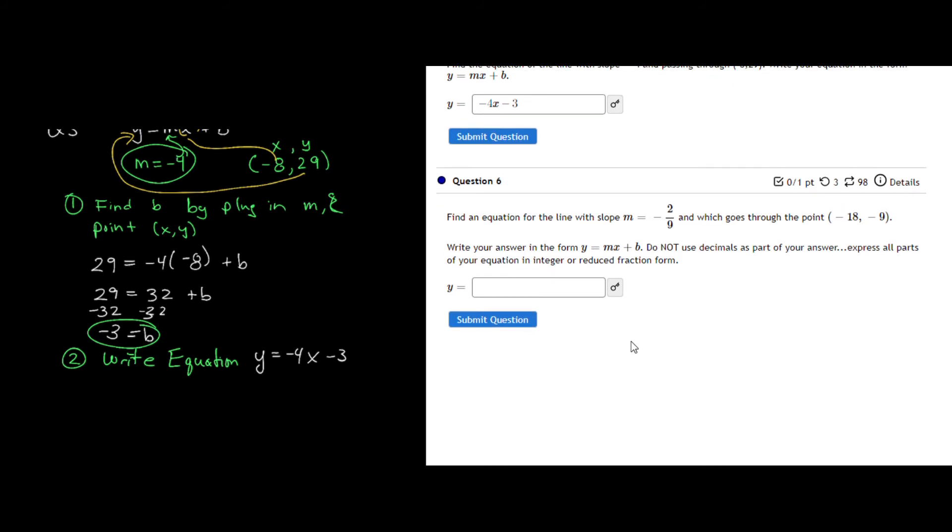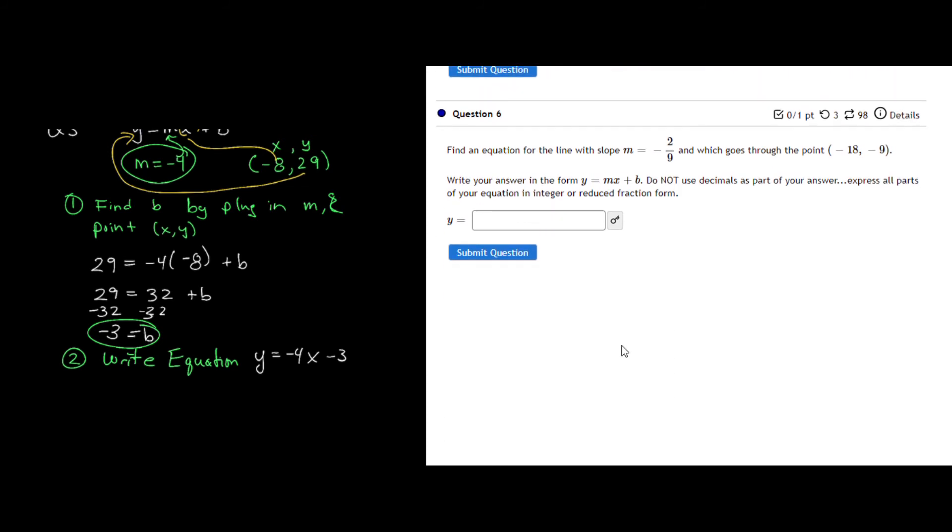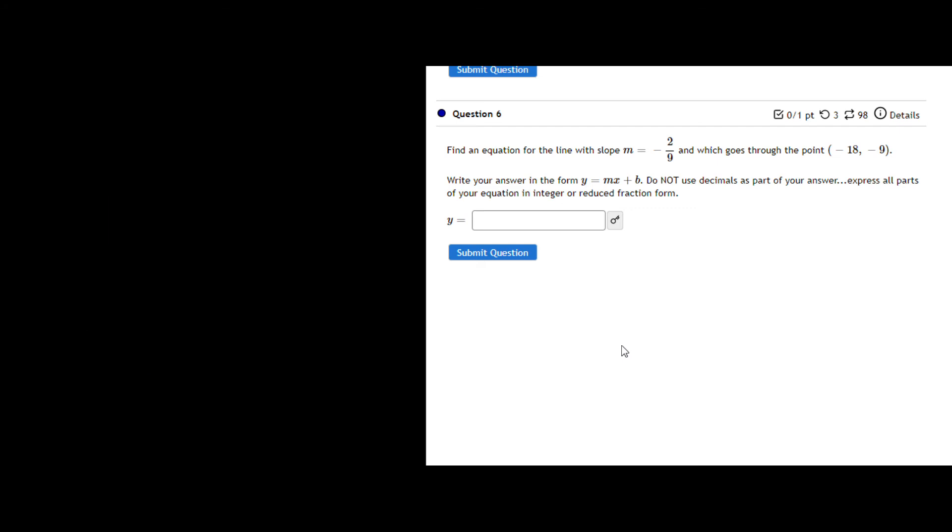So for the next piece, it says find an equation with a slope of m is equal to, this is question 6, negative 2 over 9. Now do notice what they're saying in the answer box. Do not use decimals as part of your answer. Express all of the parts of your equation, either as an integer, positive and negative whole number, or as reduced fraction. Same idea here, and then the point is negative 18, negative 9.